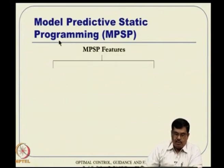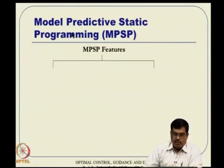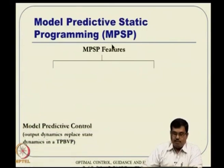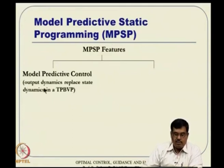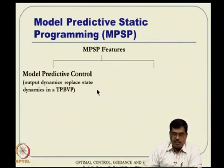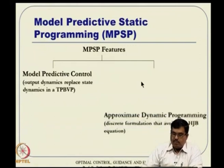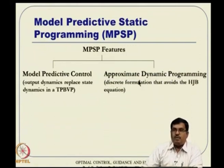Model predictive static programming — the name itself suggests 'model predictive.' The philosophy is partly borrowed from model predictive control, where output dynamics replace state dynamics in a two-point boundary value problem. Some features of MPSP rely on that part. The other side is also inspired from approximate dynamic programming, both of which we have seen so far.